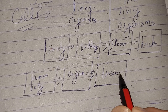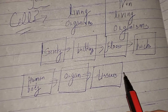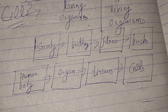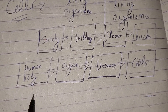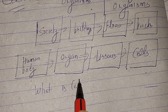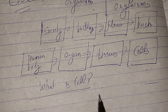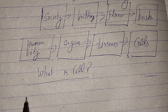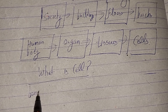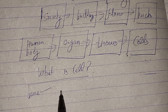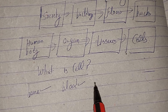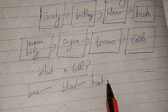Similarly, the human body has so many organs, and these organs are made of tissues. Many tissues are made of cells. Everything in the human body is made up of cells — whether it's a bone, blood, heart, or brain. Everything is made up of cells.